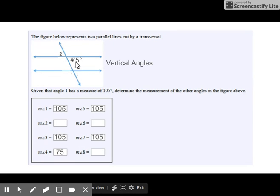Now let's look at four versus two. They are vertical angles. So angle two is congruent with four, 75 degrees.